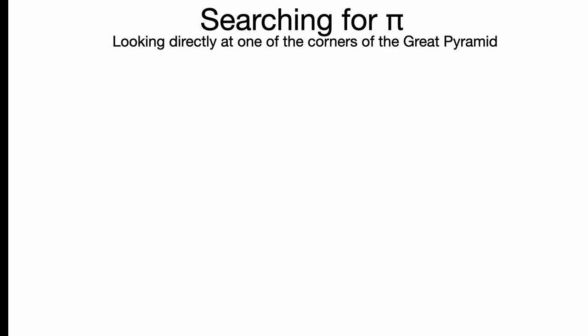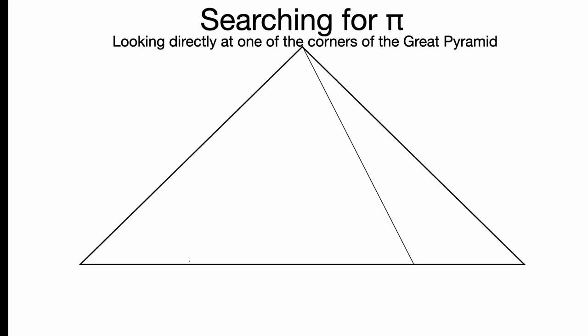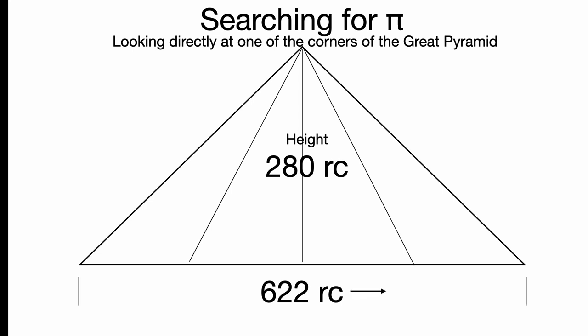Let me turn the pyramid at an angle. Let's look at its edge instead of looking at the face, which we usually look at. So if we look at the edge, we're still going to have that same 280 height. But now you've got 622 instead of 440. We're not looking at the side. We're looking at this at the edge. So from corner to corner, it's 622 royal cubits. So it's wider when you look at it from this side instead of looking at it from the front.